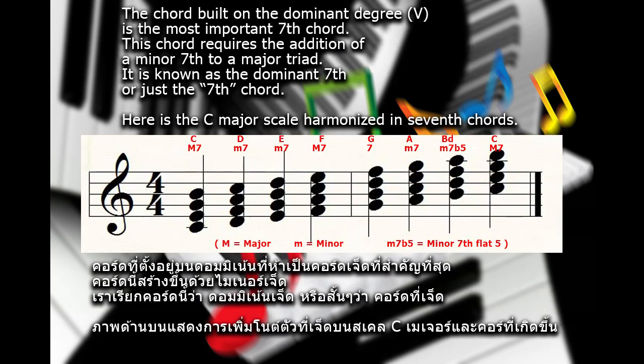The chord built on the dominant degree is the most important seventh chord. This chord requires the addition of a minor seventh to a major triad. It is known as the dominant seventh, or just the seventh chord. Here is the C major scale harmonized in seventh chords.